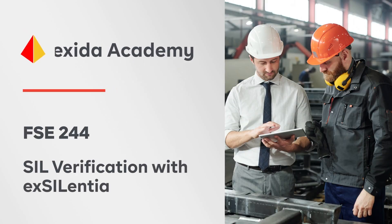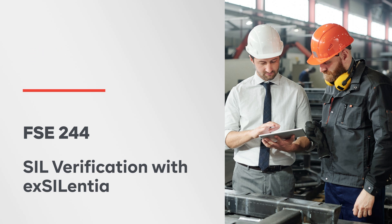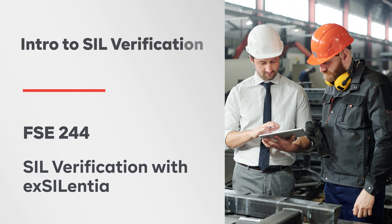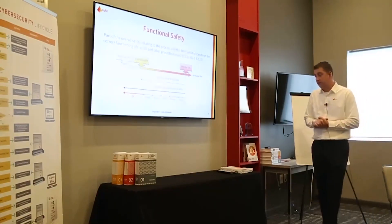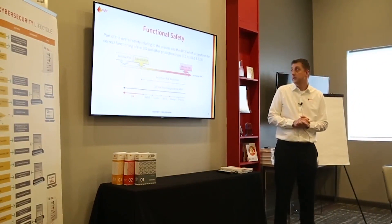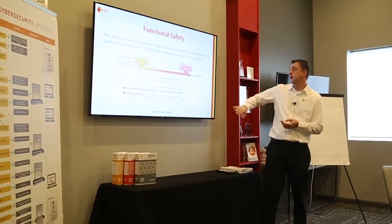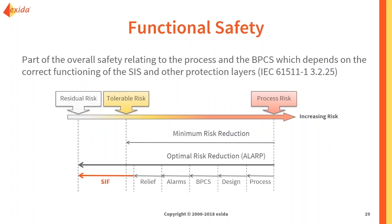Let's talk about SIL verification. We're going to look at safety instrumented functions, talk about specifying target safety integrity levels, and then how we calculate achieved safety integrity levels. When we talk about functional safety and look at IEC 61511, there's a nice definition: part of the overall safety relating to the process and the basic process control system, which depends on the correct functioning of the safety instrumented system and other protection layers.